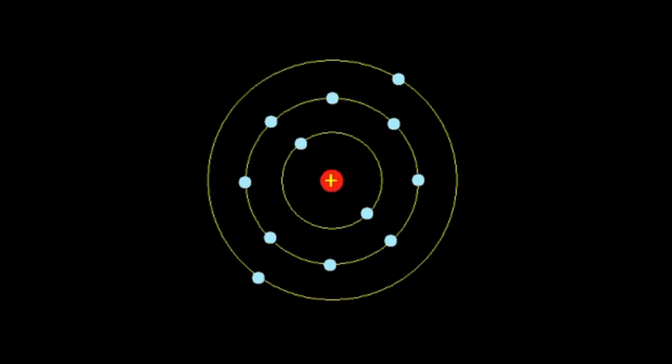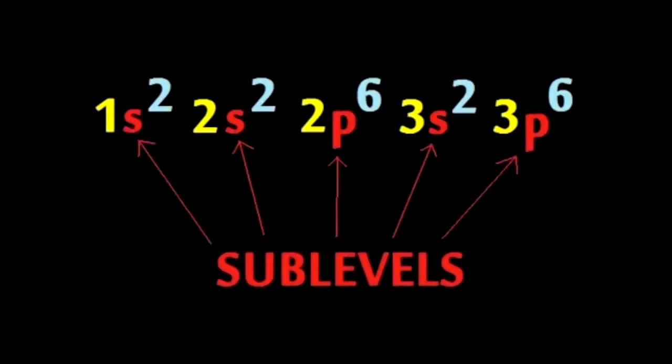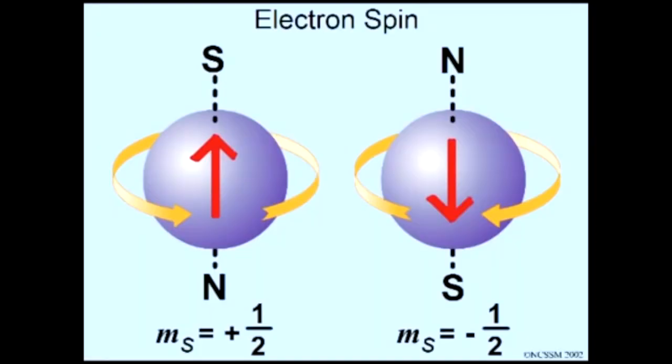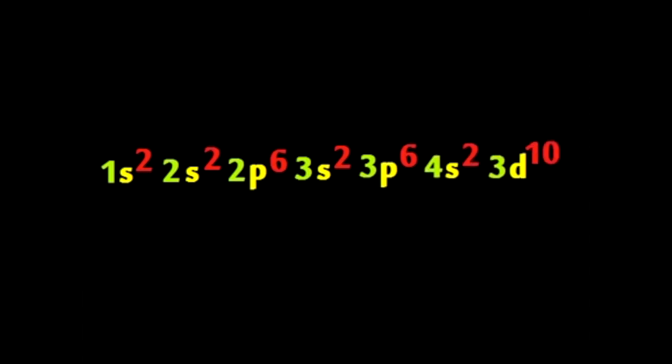Electrons are located outside the nucleus, different electrons make up the sub-levels which can then be broken down into orbitals. Two electrons per orbital, each one has opposite spin. 1s², 2s², 2p⁶, 3s², 3p⁶, 4s², 3d¹⁰.